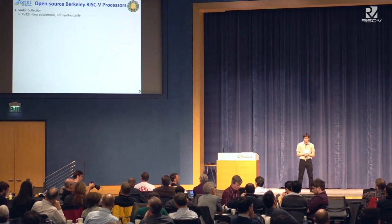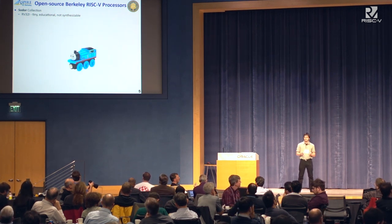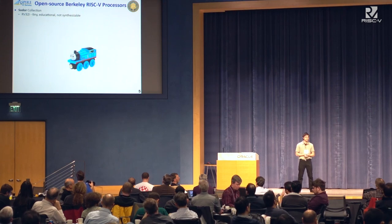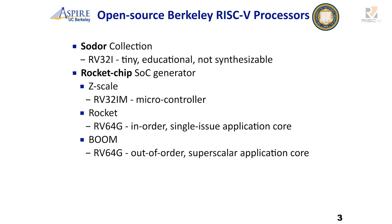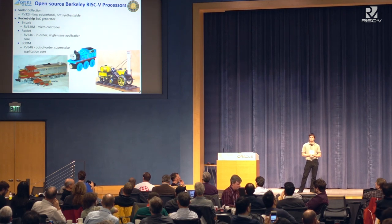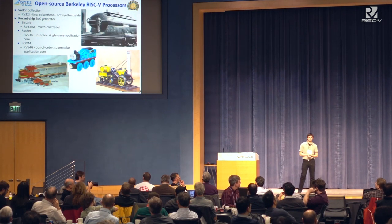At Berkeley, we've open sourced quite a few RISC-V cores. To start with is our Sodor collection — these are educational, not really synthesizable, kind of fun to play with. They're designed to introduce you to RISC-V and Chisel, and we use this for teaching our undergrads. The big thing is the RocketChip SOC generator — an entire SOC with cores, caches, cache coherence, accelerators. There are multiple cores you can choose: ZScale, Rocket (our in-order application core), and what I'm talking about today, our superscalar out-of-order core.